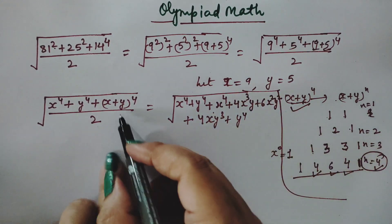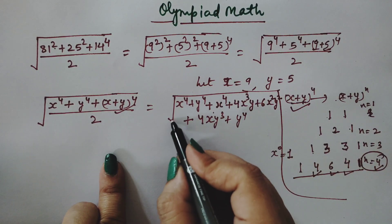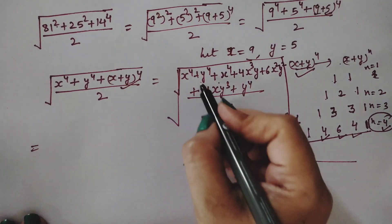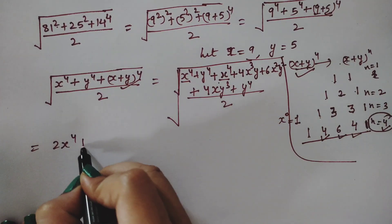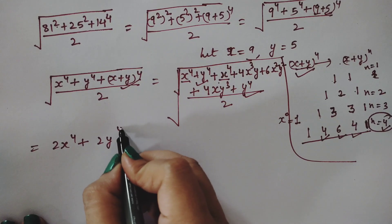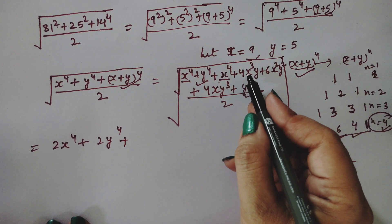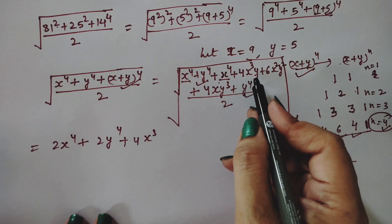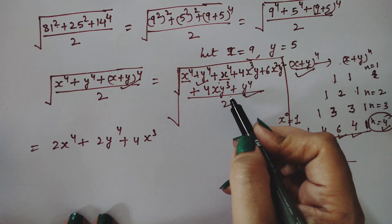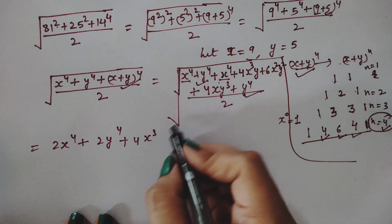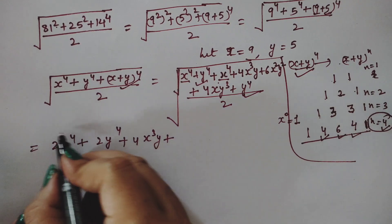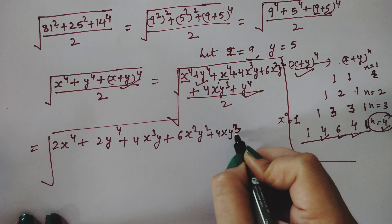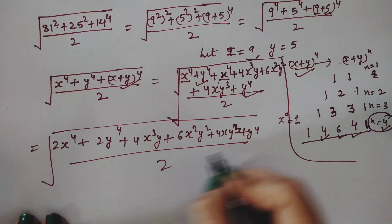We now split and group terms. We have x⁴ and x⁴ giving 2x⁴; y⁴ and y⁴ giving 2y⁴; plus 4x³y + 4xy³ + 6x²y², all divided by 2. Writing the like terms together: 6x²y² + 4x³y + 4xy³, divided by 2.